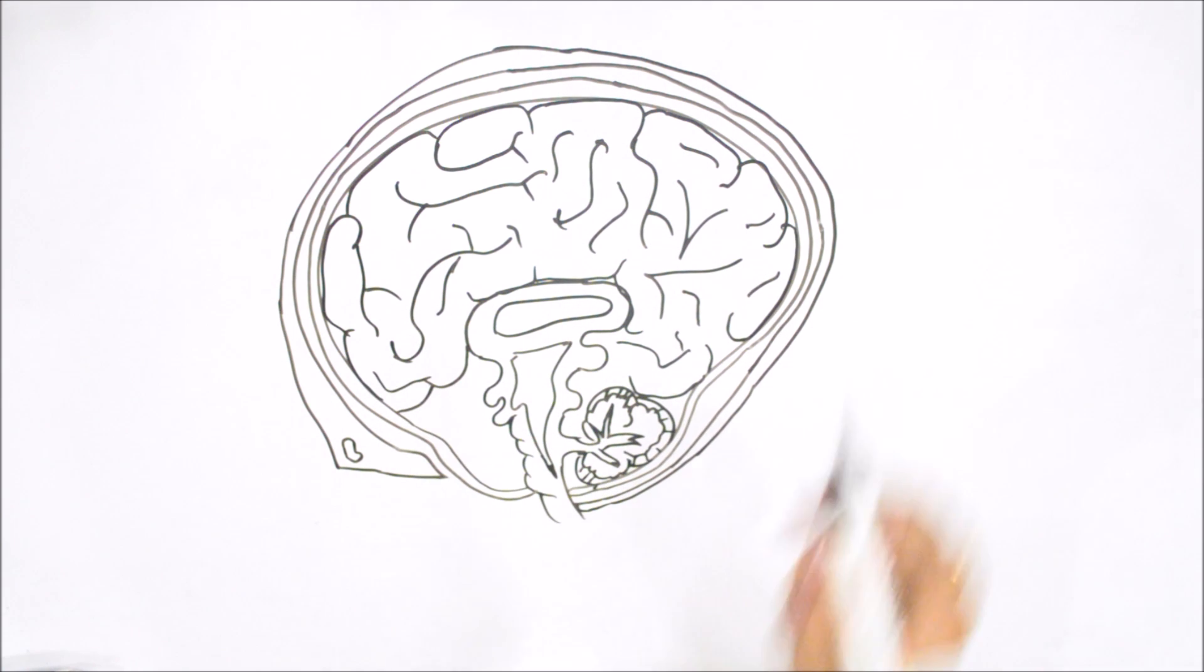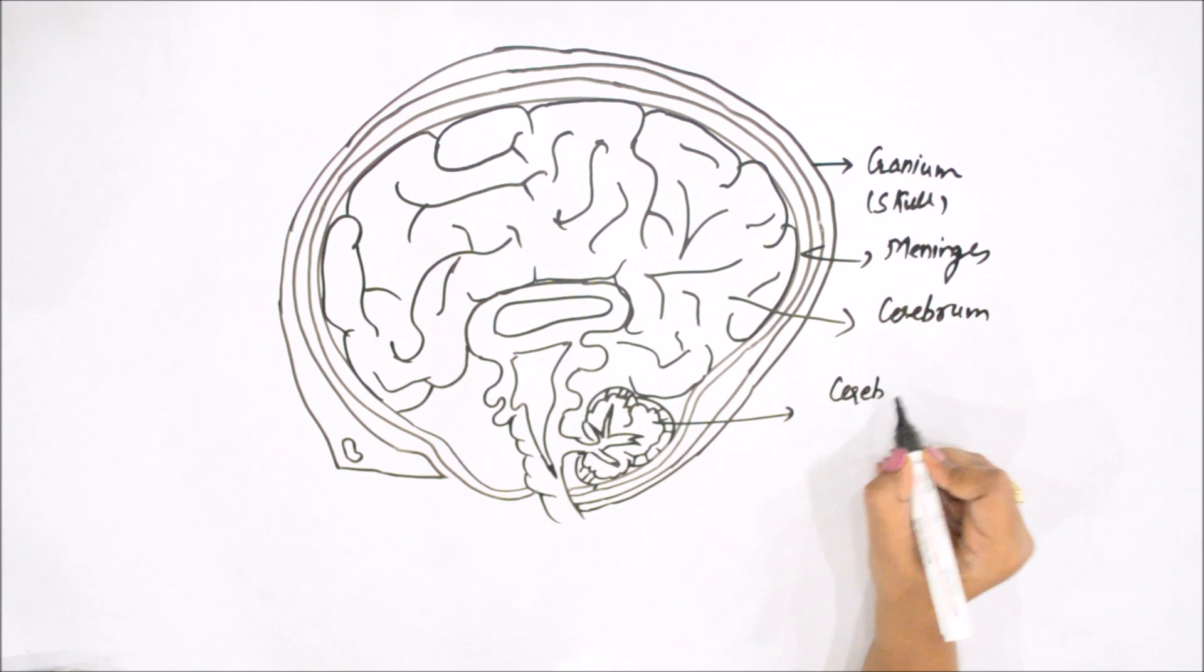This is your brain. Outer covering, that is cranium means skull. There are 3 meninges which protect the brain from injury. Cerebrum, largest part, thinking part. Cerebellum, second largest part. This is your spinal cord in continuation with brain.